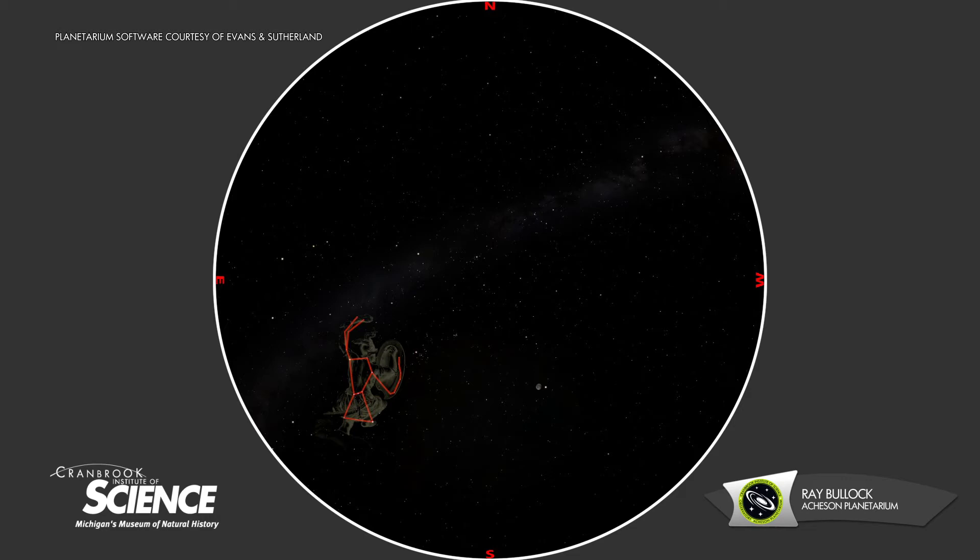The two stars at the top mark Orion's shoulders, the two stars at the bottom are his feet, and three stars in a row mark his belt. Below the belt is a small cluster of stars that represents a sword.